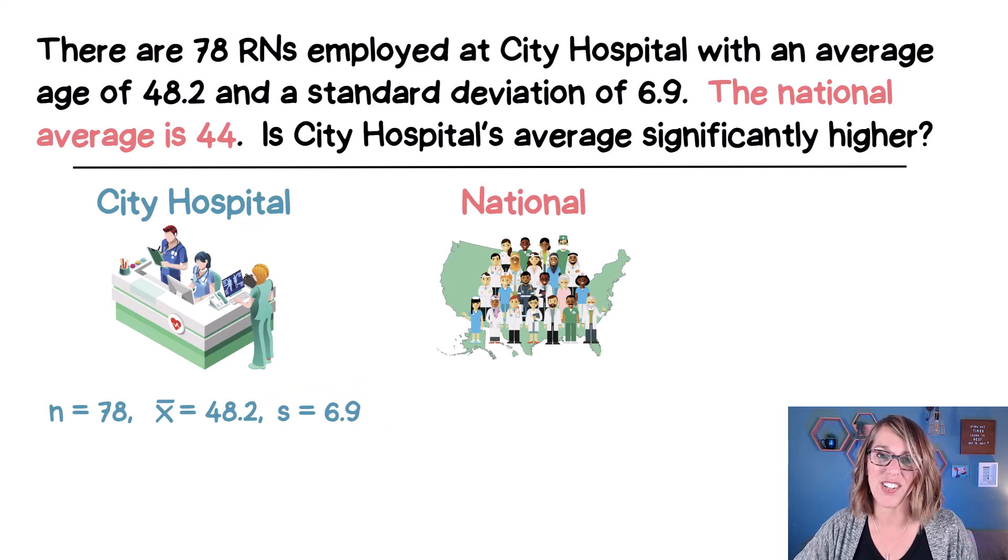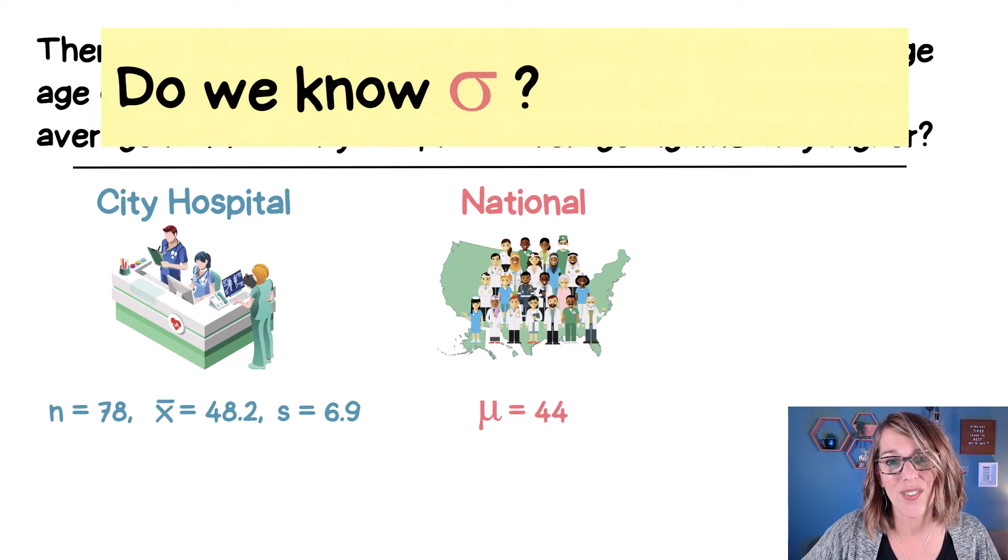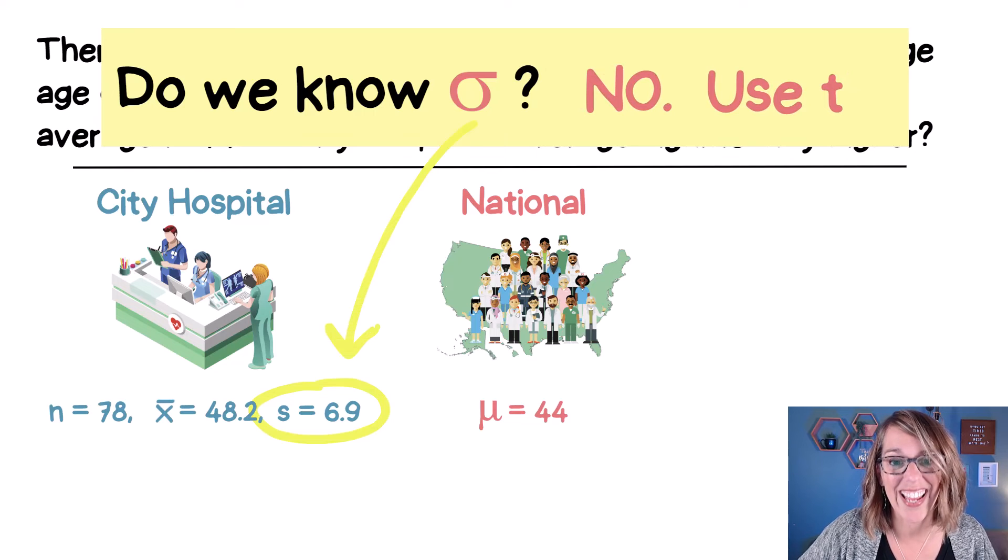And then of course, I've got that national average of 44. So I end up with mu is equal to 44. We do not know the population standard deviation. This one is a T.